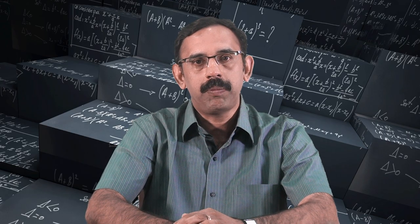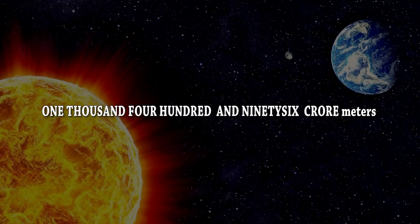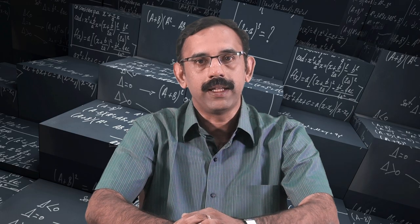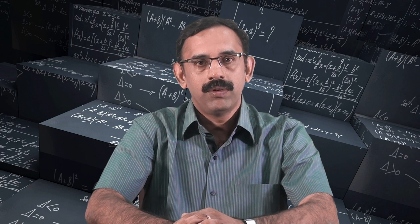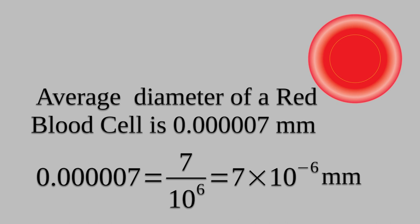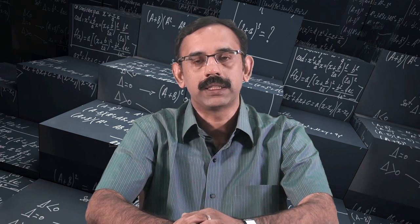Now let us see a few applications of exponents. The distance from Earth to the Sun is 1496 crore meters, which can be written in standard form as 1.496 times 10 raised to 11 meters. Similarly, we can write very small numbers in standard form. For example, the average diameter of a red blood cell is 0.0000007 mm, which is 7 divided by 10 raised to 6, equal to 7 times 10 raised to minus 6 millimeters. Thus, we can use exponents to express both very small and very large numbers in standard form.